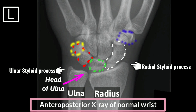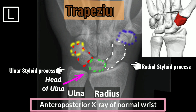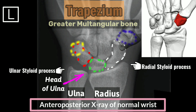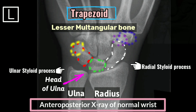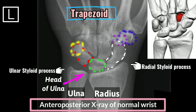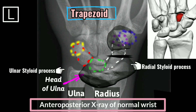In the distal row on the radial side, the trapezium articulates with the first metacarpal distally, scaphoid proximally, trapezoid and second metacarpal medially. It is also called the greater multangular bone. The trapezoid, also called the lesser multangular bone, is a four-sided bone articulating with the scaphoid proximally, second metacarpal distally, trapezium laterally, and capitate medially.